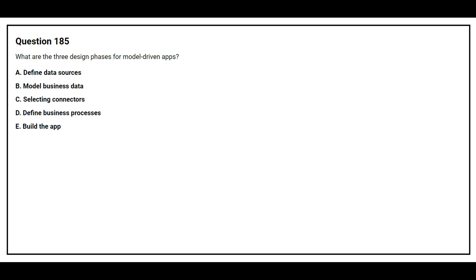Question number 185. What are the three design phases for model-driven apps? Option A: Define data sources. Option B: Model business data. Option C: Selecting connectors. Option D: Define business processes. Option E: Build the app.